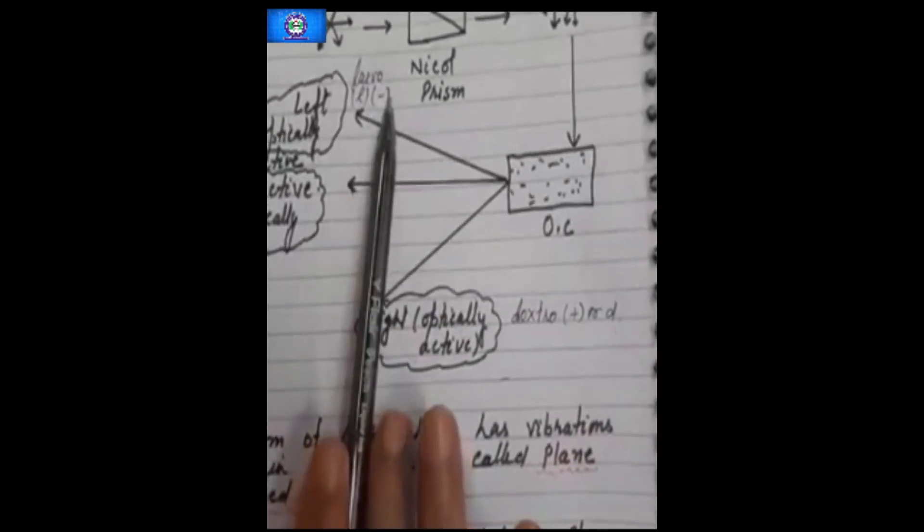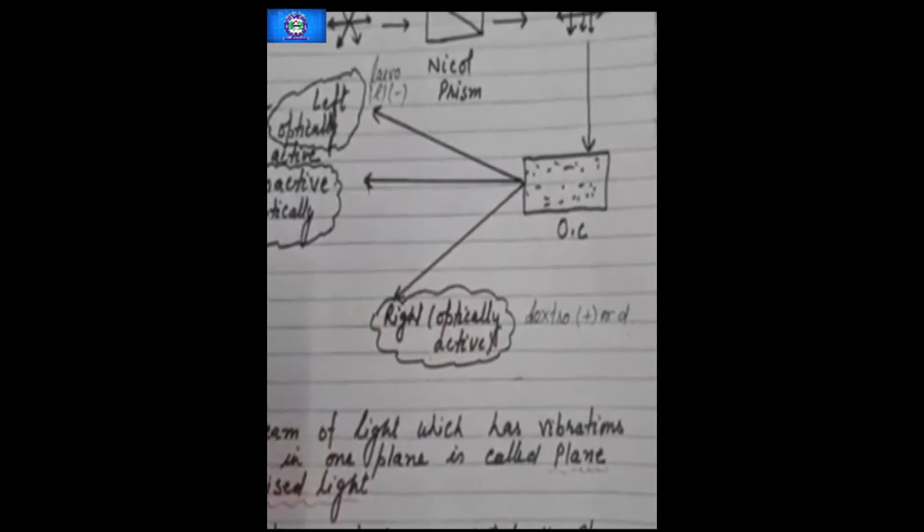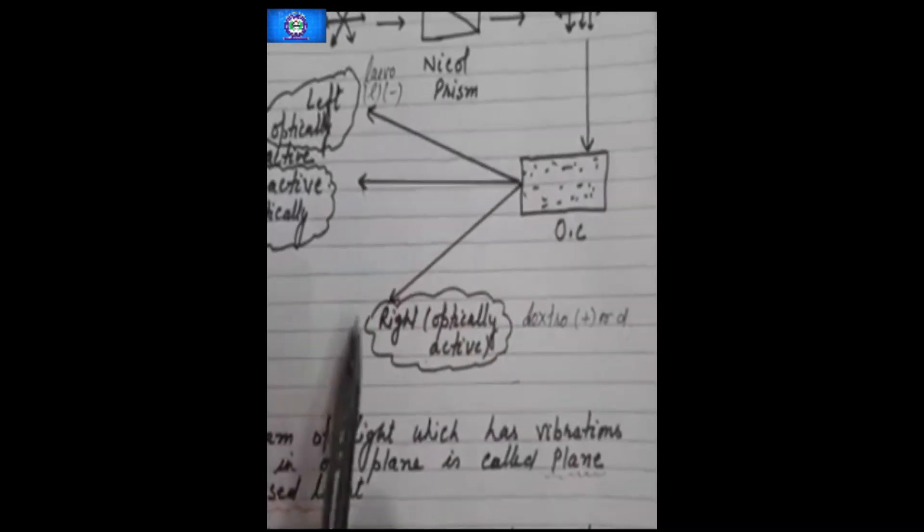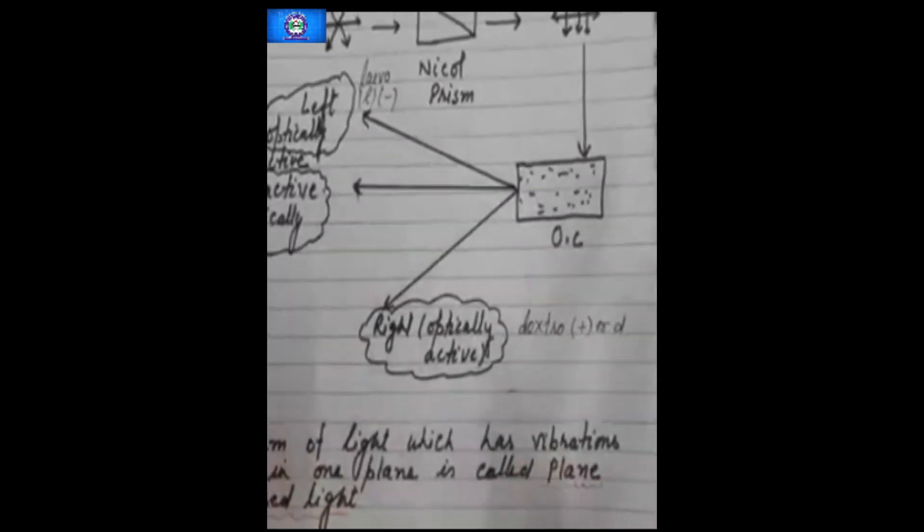Compounds which can rotate the plane of polarized light towards left or right are known as optically active substances, and this property is known as optical activity.